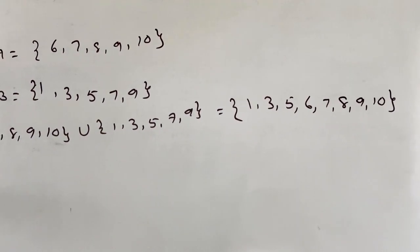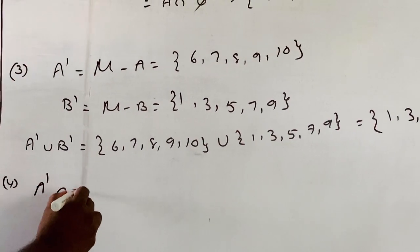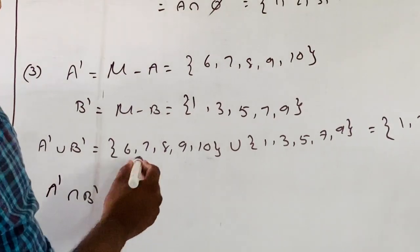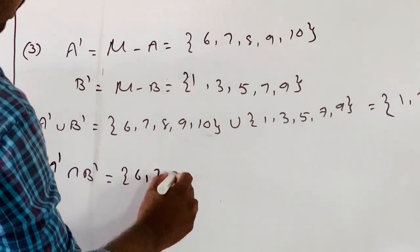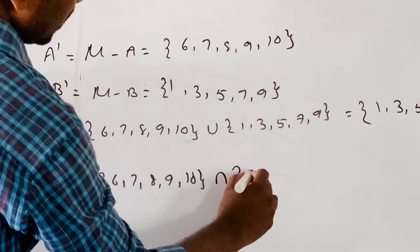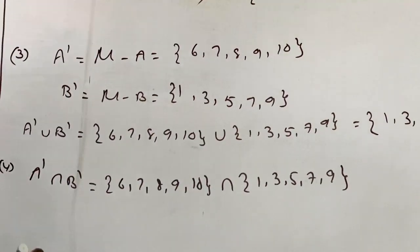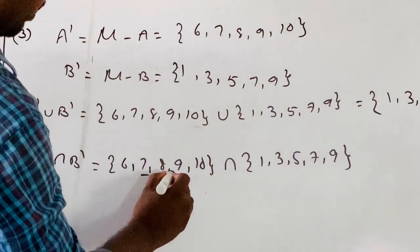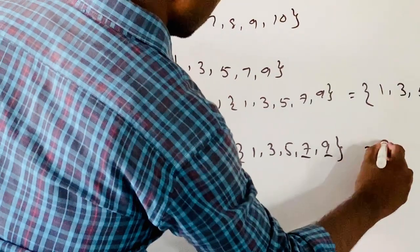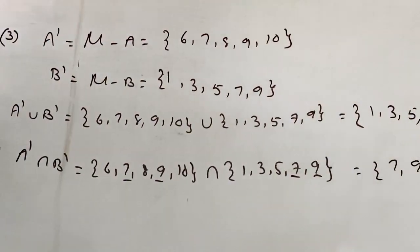Fourth: A dash intersection B dash. A dash is {6, 7, 8, 9, 10} and B dash is {1, 3, 5, 7, 9}. The common elements of both are 7 and 9. So A dash intersection B dash equals {7, 9}.